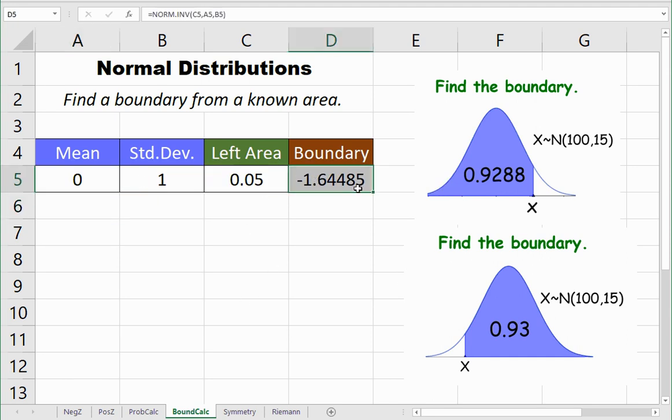Now it gives me the boundary, which I know is right because this is a special z-score. So this seems to be working well.